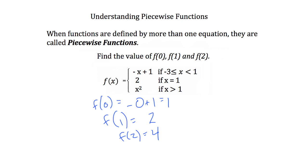To find the domain of f, we look at its definition. Since f is defined for all x greater than or equal to negative 3, the domain of f is x is greater than or equal to negative 3, or the interval negative 3 with a bracket, comma, infinity. To graph f, we graph each piece, because it's a piecewise function with more than one section.